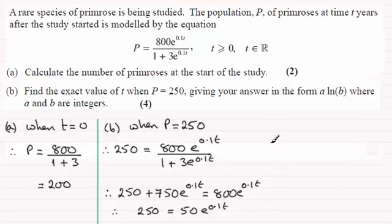And so I can divide through both sides by 50. 250 divided by 50 is 5, so I'm left with e to the power 0.1t equals 5. And now I've got to use natural logs here. I'm going to take the natural log of both sides. So if I take the natural log of this side, it's just going to be 0.1t. So we get 0.1t equals the natural log of 5.